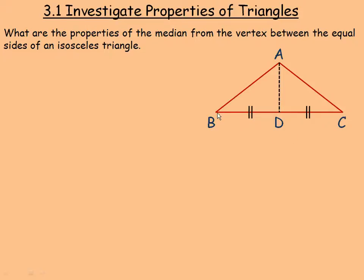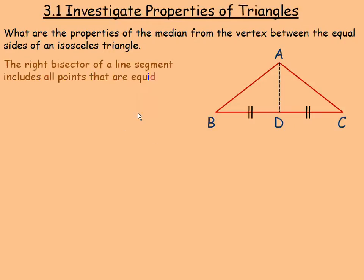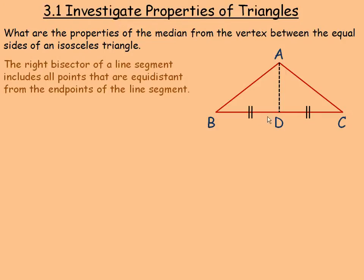Since D is the midpoint, BD and CD are equal. Now the right bisector of a line segment includes all points that are equidistant from the endpoints of the line segment. So we're investigating whether this median is also the right bisector. It includes all points equidistant from B and C.